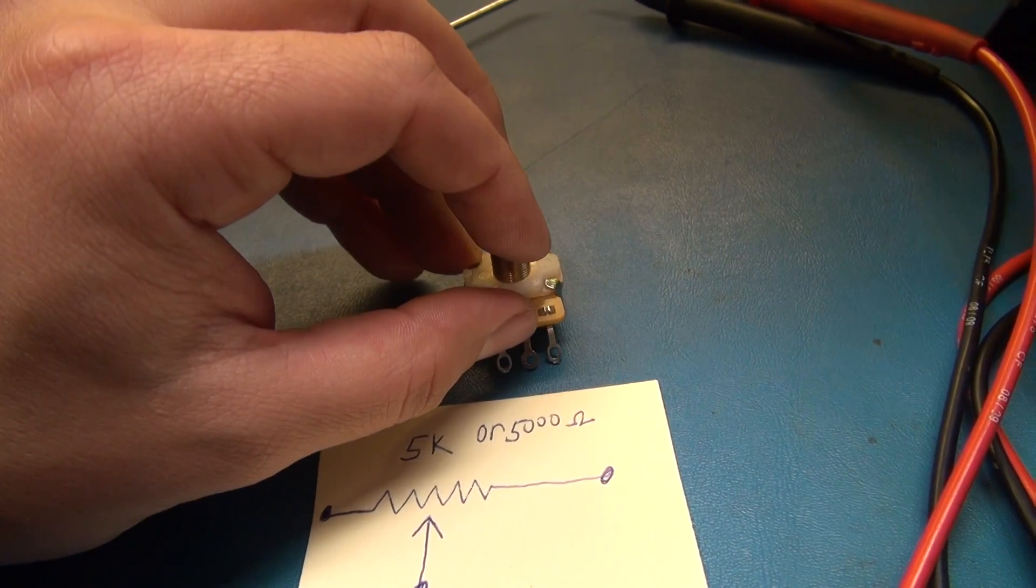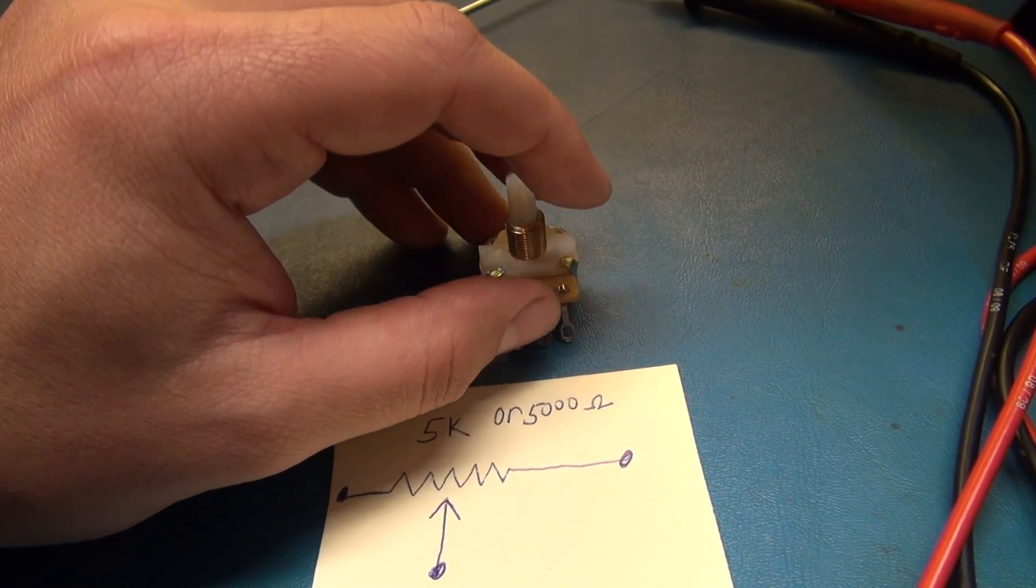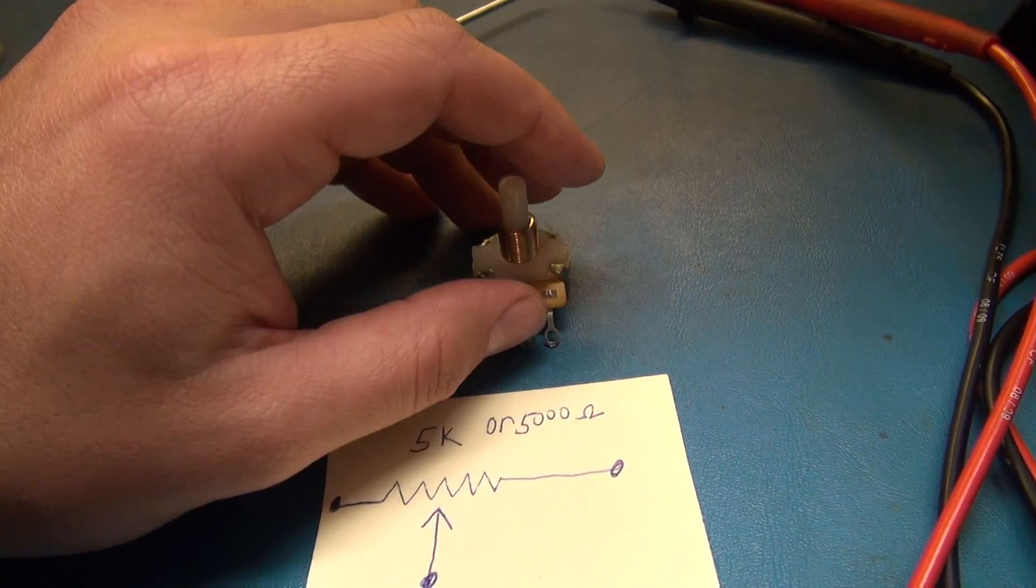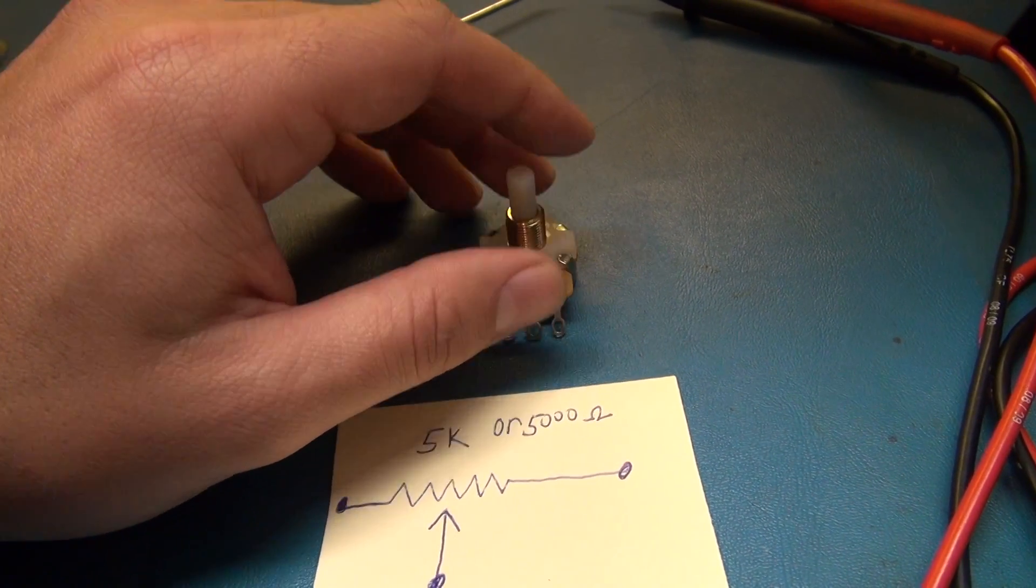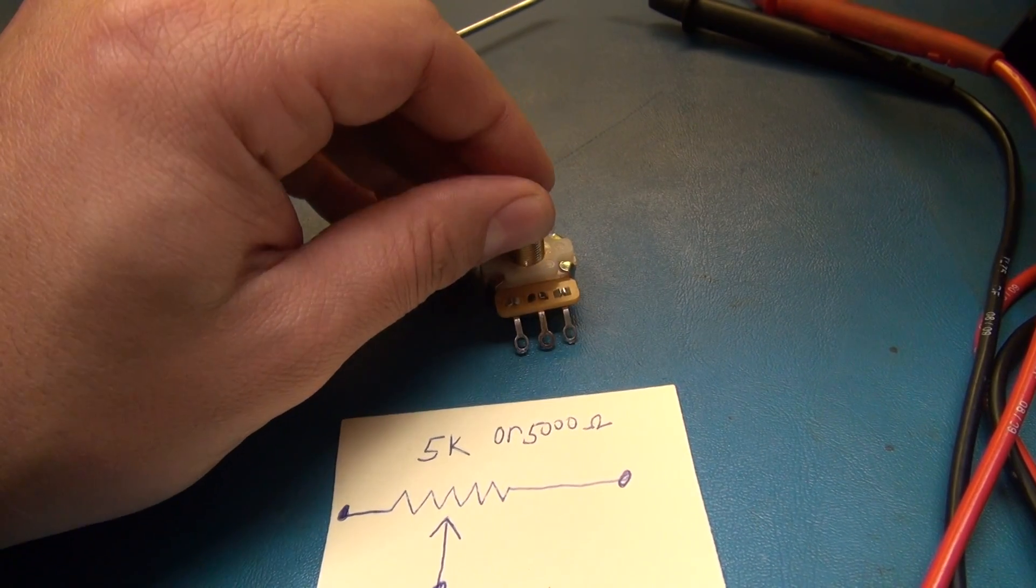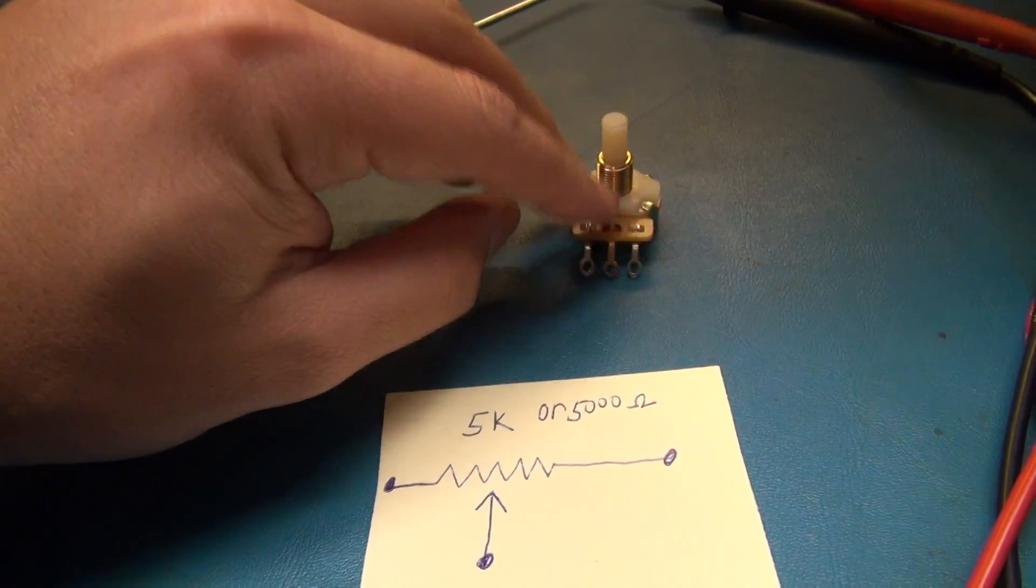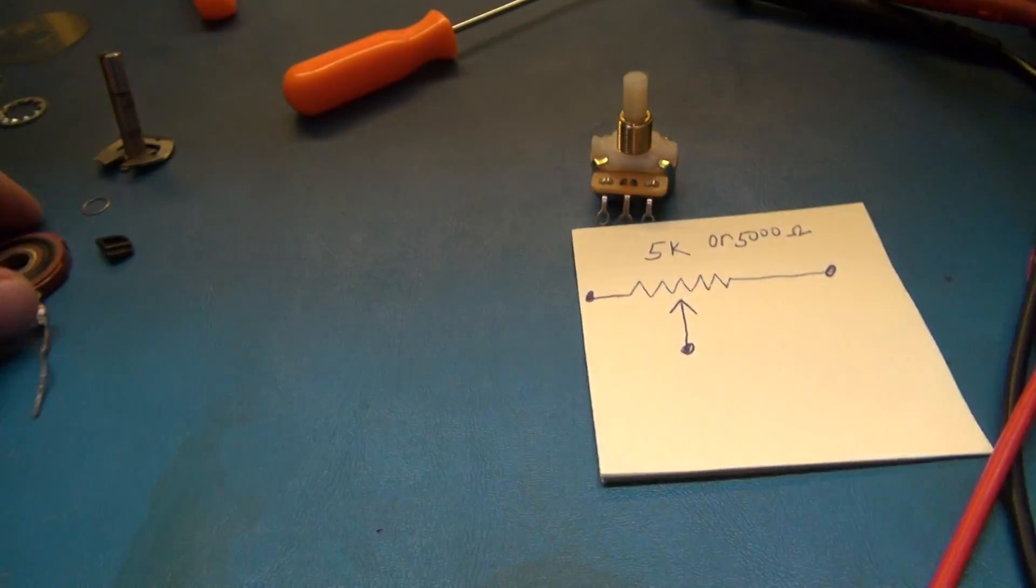You're going to see jumps in its function, and that is caused by either oxidation or wear on the potentiometer wiper.